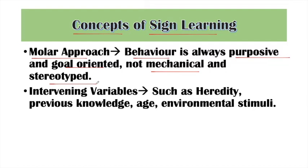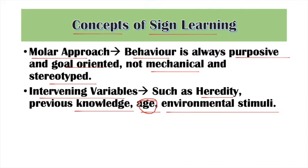The next concept is Intervening Variables, such as heredity, previous knowledge, age, and environmental stimuli. Heredity greatly influences a person's learning ability. Age also matters a lot — for example, a 10-year-old child will be more efficient in learning than a 6-year-old. Also, what stimuli and signals the learner receives from the environment matters — if proper stimulus is not received, proper learning cannot happen.